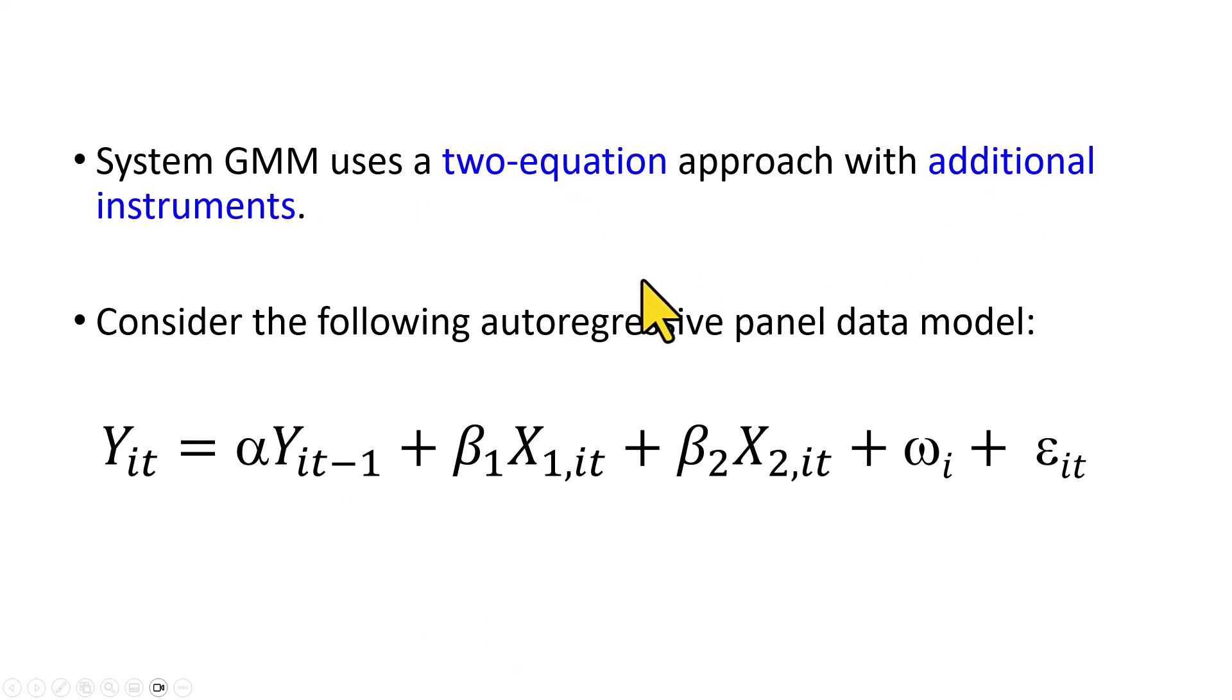And we're going to demo this using this three variable model: y, x1, and x2, with the lagged dependent variable included as a regressor, making this a dynamic model.